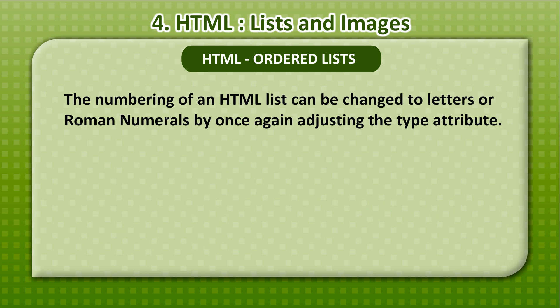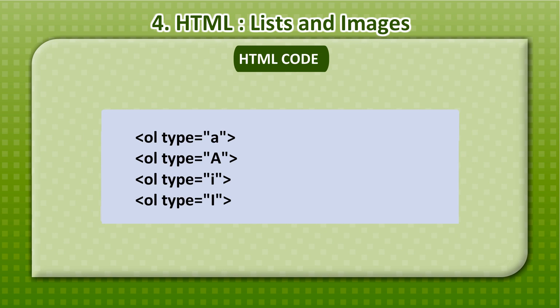The numbering of an HTML ordered list can be changed to letters or Roman numerals by adjusting the type attribute. The OL type options include lowercase a, uppercase A, lowercase i for Roman numerals, and uppercase I for Roman numerals.